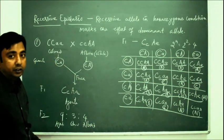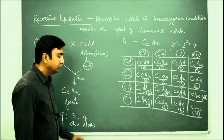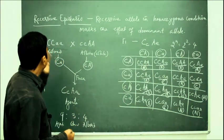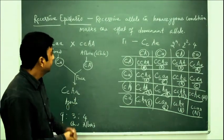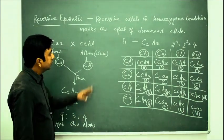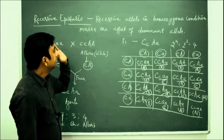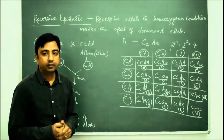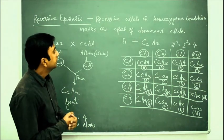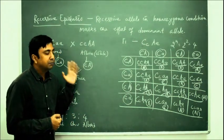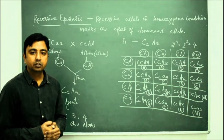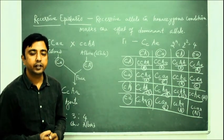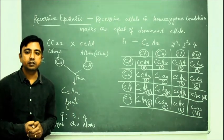So in the F2 generation we get a phenotypic ratio of 9 agouti : 3 colored : 4 albino. This is all about recessive epistasis, in which the homozygous recessive allele masks the effect of a dominant allele. After this we will discuss some questions so that the concept becomes clearer.